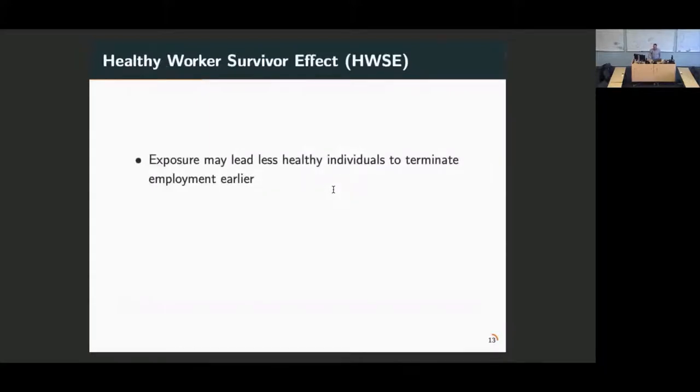The main methodological issue for this example is the healthy worker survivor effect, or time-varying confounding affected by prior exposure. As exposure may affect less healthy individuals, they determine their employment earlier than the more healthy individuals. The more healthy individuals will accumulate more exposure, but are also less prone to health outcomes, whereas the less healthy individuals have less exposure, are more prone to health outcomes. That makes it look like the exposure is protective, even though it's not. This is an example of time-varying confounding affected by prior exposure.